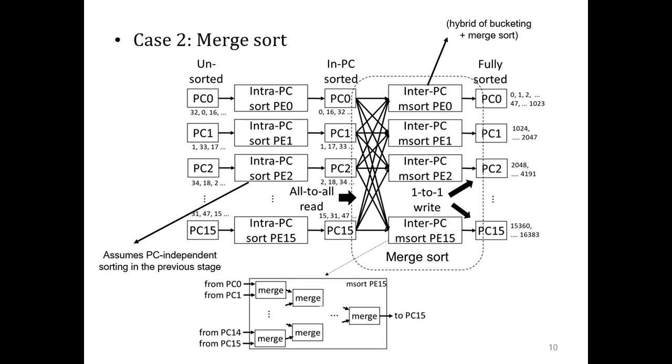The second application is merge sort. In this case, we assume that sorting has already been performed inside a PC and will perform inter-PC merge sort. So in this case, an all-to-all interconnect architecture is required on the read.